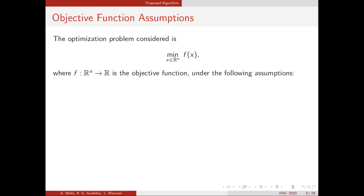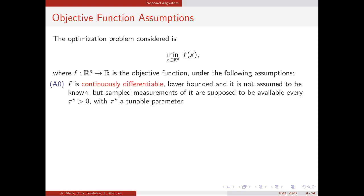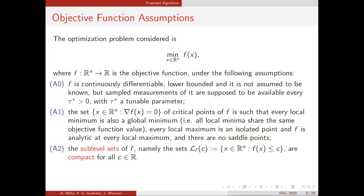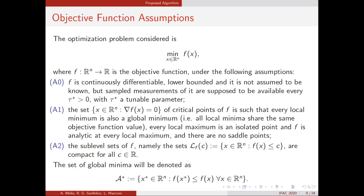Now let's move to the algorithm that we proposed, and in particular to the assumptions on f. We want to extend the previous results, and we consider the optimization variable x to belong to R^n with n greater or equal to 2. We assume the function f to be differentiable, lower bounded, not assumed to be known, and with sampled measurements available every tau seconds. Regarding the set of critical points, we assume that every local minimum is also a global minimum, and we allow the possibility of local maxima as long as they are isolated points and f is analytic at those points, but we don't allow saddle points. We assume the sublevel sets of f are compact. We denote the set of global minima as A*.